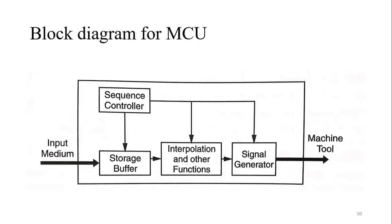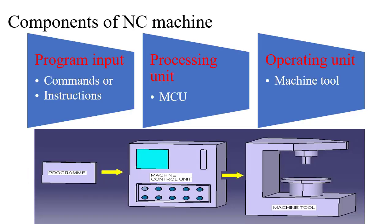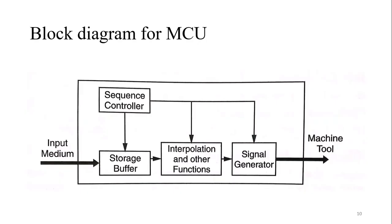This is a block diagram of the MCU. The MCU is the unit that completely controls all the functions happening on the machine tool. The program is inserted, and it is the MCU's responsibility to determine how to perform the task. The components inside the MCU include a storage buffer — the input data or program is inserted into the machine and stored temporarily in the MCU. Then there is interpolation, which stands for calculating the path. The MCU has a function to calculate the path and give instructions according to the desired output or program.